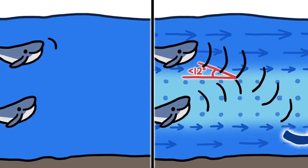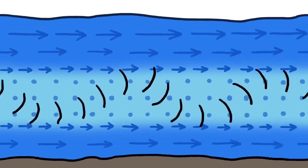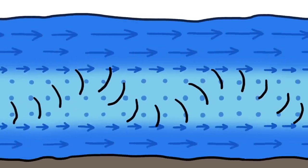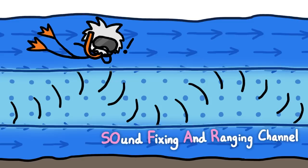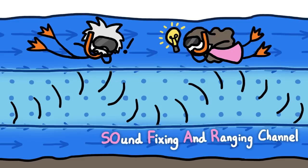So rather than spreading out and scattering off the surface or getting absorbed by the ocean floor, sounds in this layer get funneled along and can go and go and go. So this layer, appropriately called the SOFAR channel, may be a weird quirk of physics, but it's also really useful.